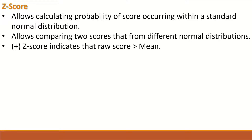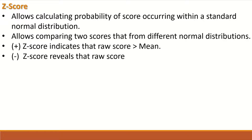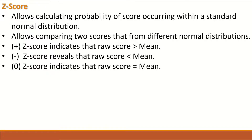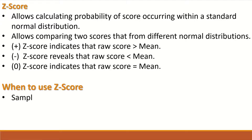A positive z-score indicates that the raw score is higher than the mean, which is equal to 0. A negative z-score reveals that the raw score is less than the mean. A z-score of 0 indicates that the raw score is equal to the mean. We should use the z-score when we have a sample size greater than 30 and the population standard deviation is known.